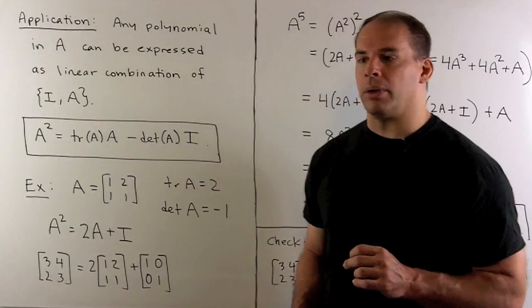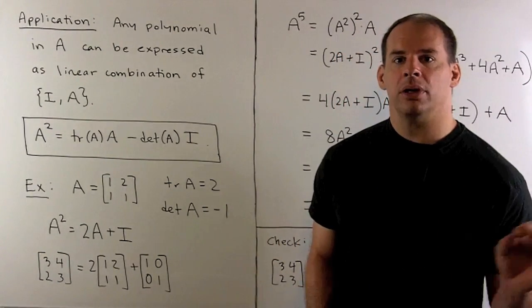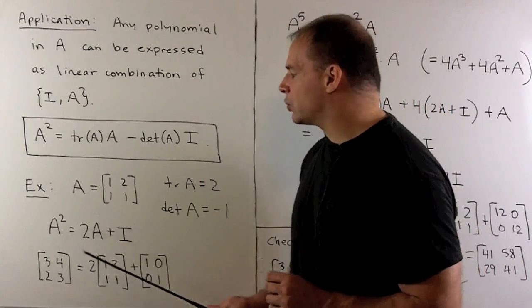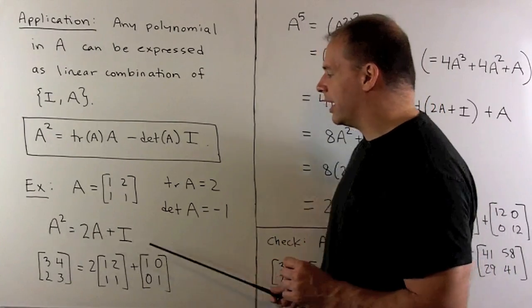So, let's look at an example. If I have A equal to [1 2; 1 1], trace of A is 2, determinant of A is minus 1. Then, I have A squared equals 2A plus the identity matrix. So, we could see this explicitly.